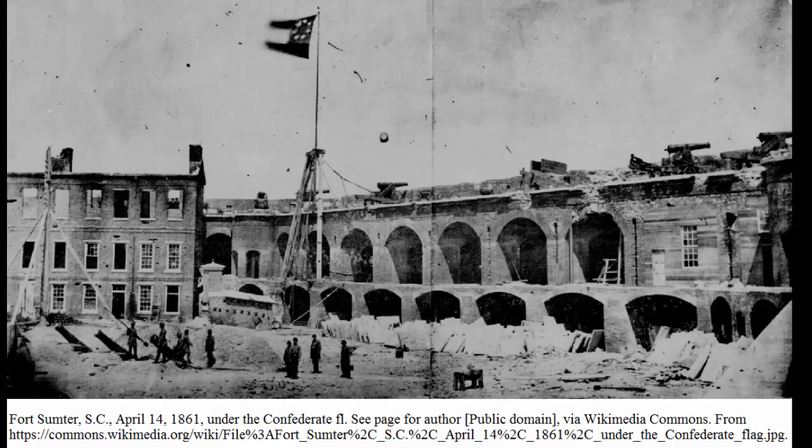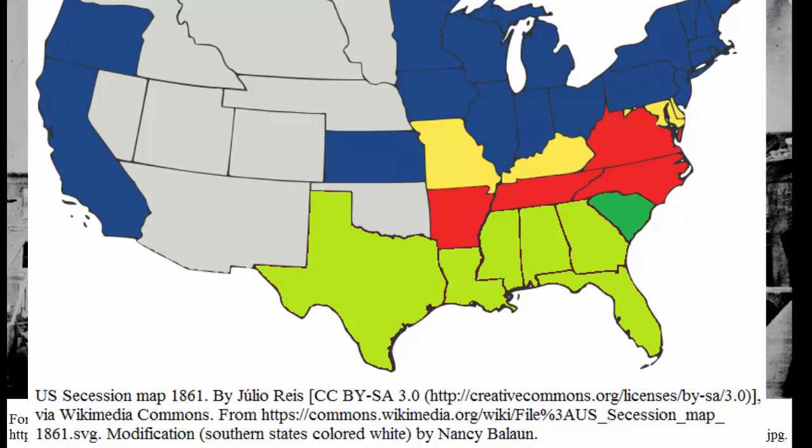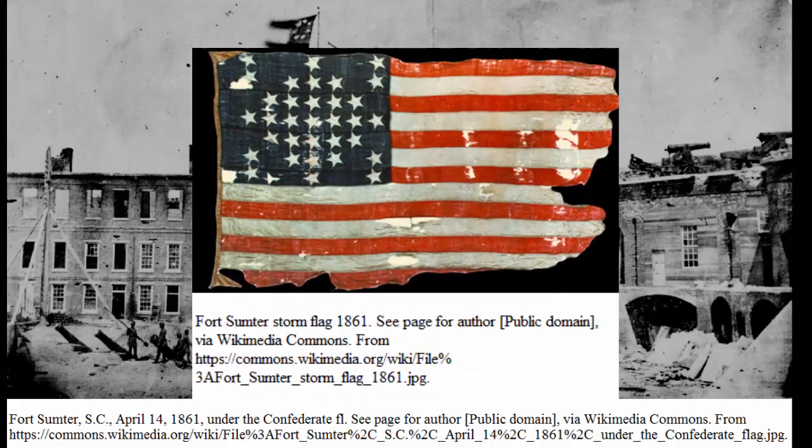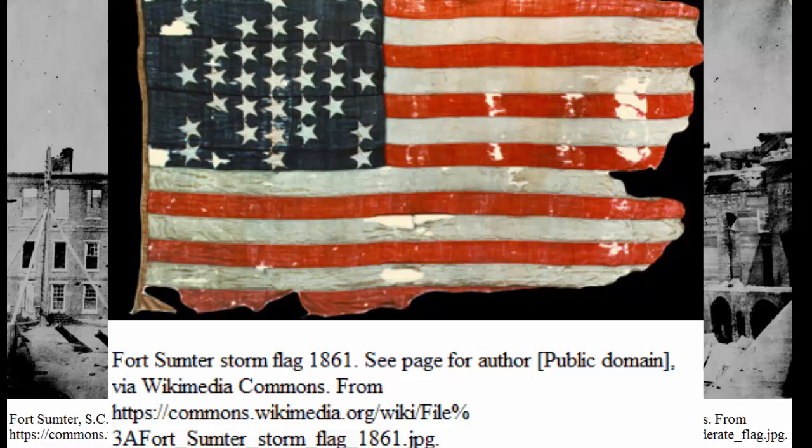Lincoln firmly believed that secession was unconstitutional, and determined to get Fort Sumter and other forts like it back. He issued a call for states to send troops into the South to recapture these forts and return the southern states to the Union. It was this action — the use of armed force by the Federal government to compel the southern states to comply — that caused an additional four states to secede from the Union. It would be four long years of war before Fort Sumter would once again fly the stars and stripes, and its loss proved to be a strategic thorn in the Union Navy's attempted blockade of the South during the war.